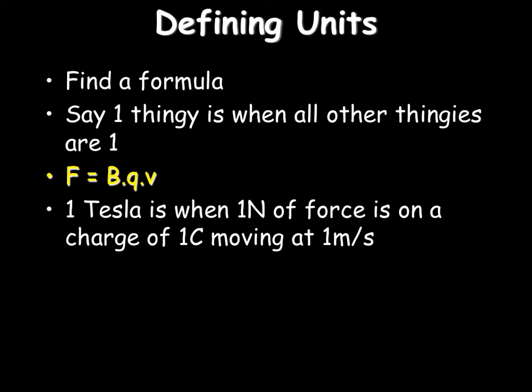We can use this formula to define a unit. We're going to use it to define what a Tesla is. If you look at the formula F equals Q times B times V, and you want to know what one Tesla is, you set everything else as one. The magnetic field density is one Tesla when a force of one newton is on a charge of one coulomb moving at one meter per second. If everything is one, then B will be one, and we call that one Tesla.